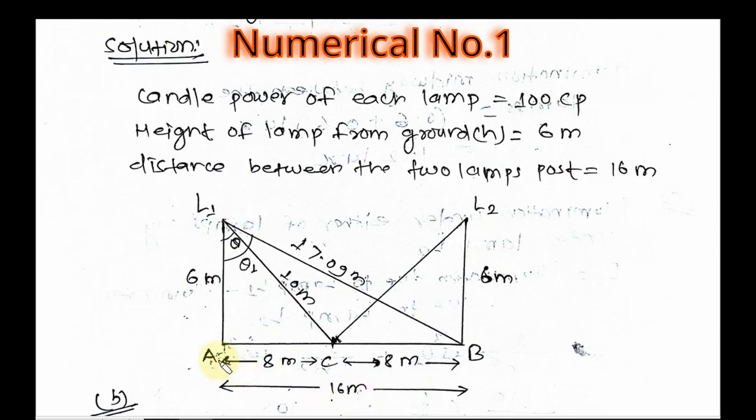A and B are 16 meters apart, and C is the midpoint between the lamps, dividing the distance into equal halves of 8 meters each. From the Pythagorean theorem, we find the distance is 10 meters.